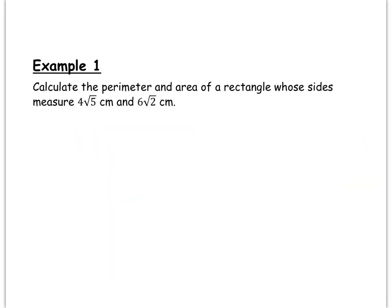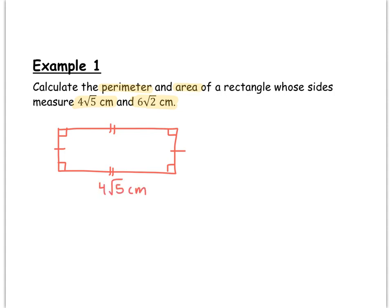Now let's look at a few examples of calculating perimeters and areas. In our first example, we're asked to calculate the perimeter and area of a rectangle whose sides measure 4√5 centimeters and 6√2 centimeters. I'm going to begin by drawing a diagram of this rectangle — it's a good geometry problem-solving strategy. We'll put in 4 right angles and mark off that opposite sides have the same length. So we label one pair of sides as 4√5 centimeters and the other pair as 6√2 centimeters.